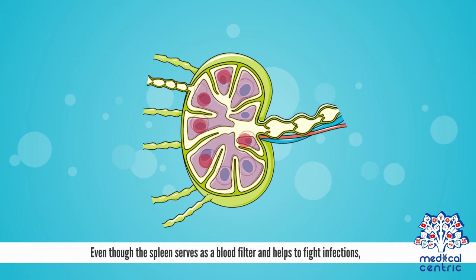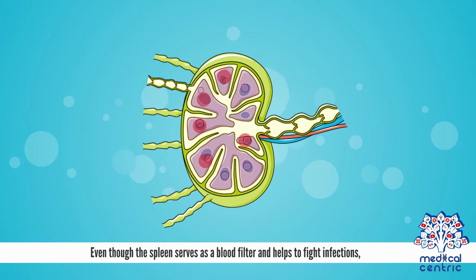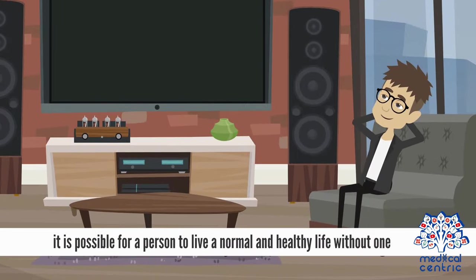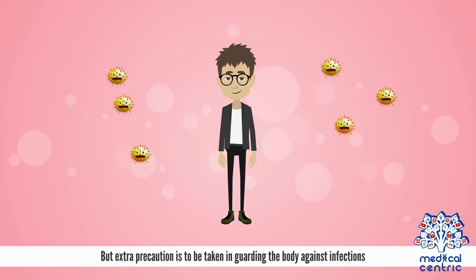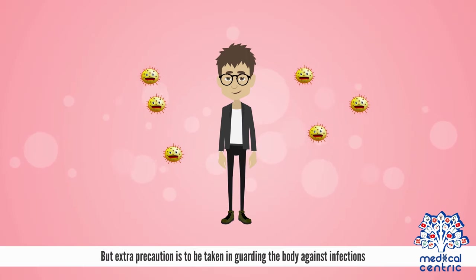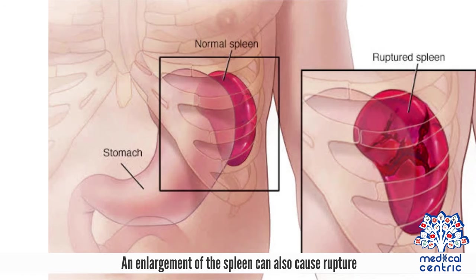Even though the spleen serves as a blood filter and helps to fight infections, it is possible for a person to live a normal and healthy life without one, but extra precaution is to be taken in guarding the body against infections. An enlargement of the spleen can also cause rupture.